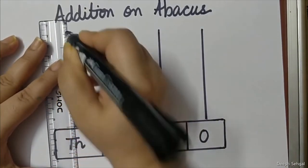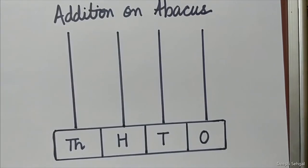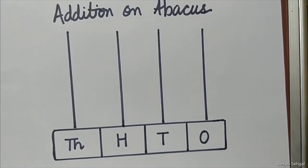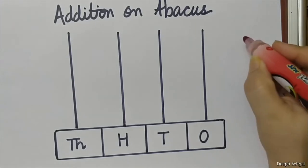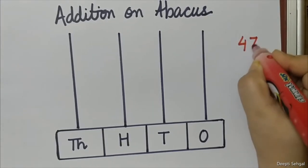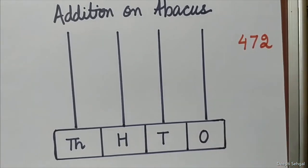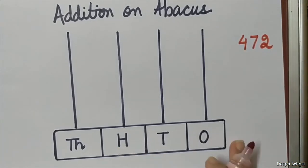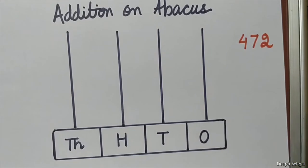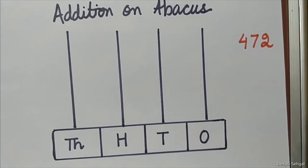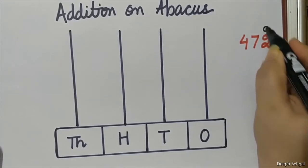Now let us choose any three-digit number. Suppose I am choosing 472. So how will I represent 472? I know 2 is at ones place, so on ones place I have to draw 2 beads.